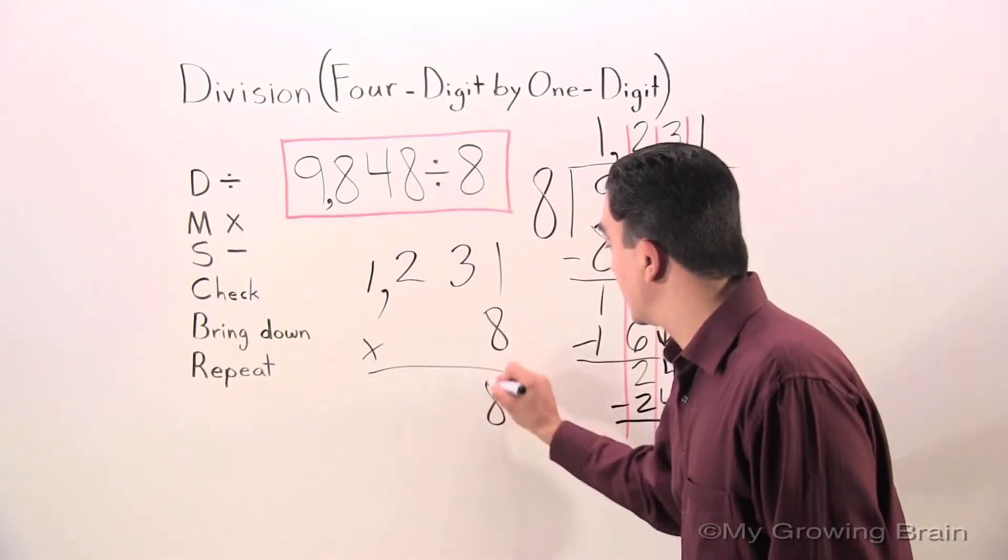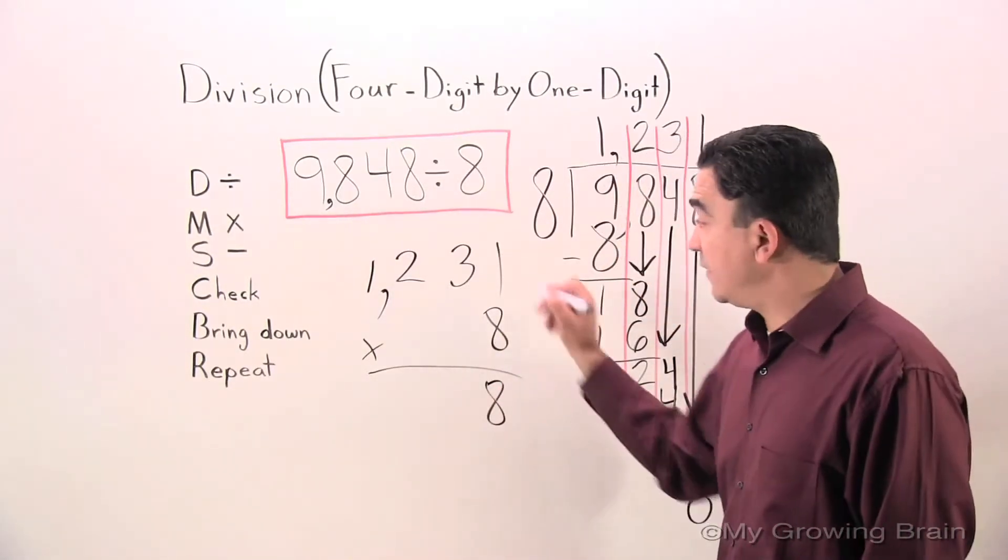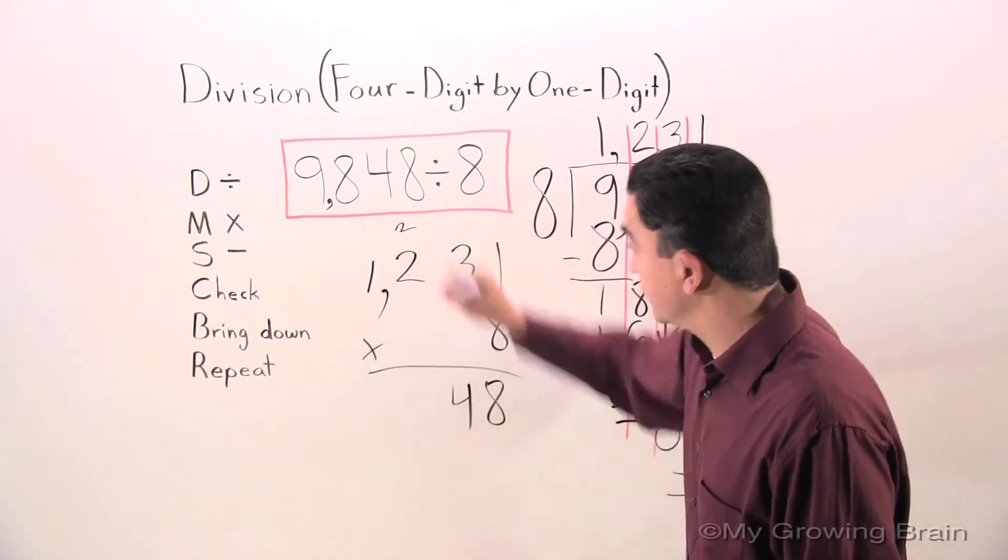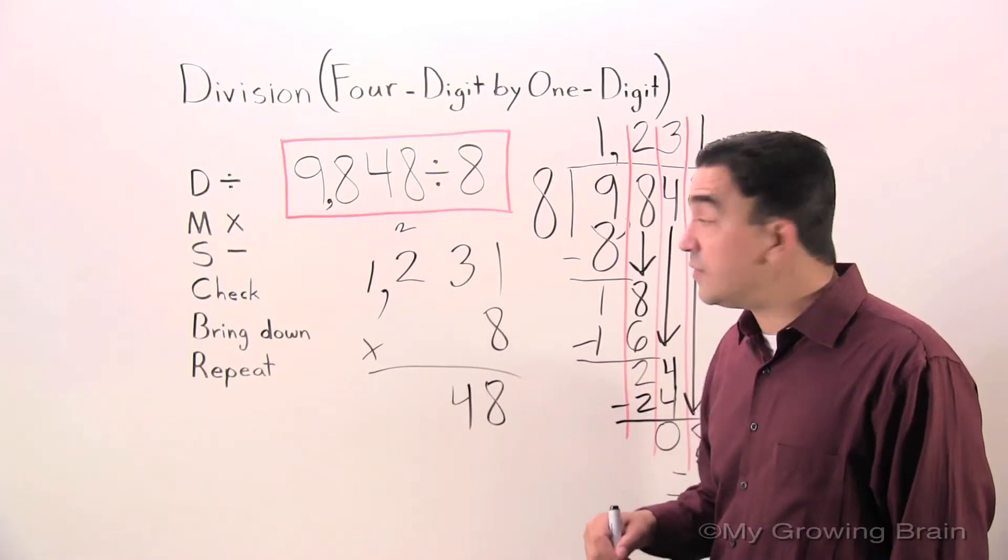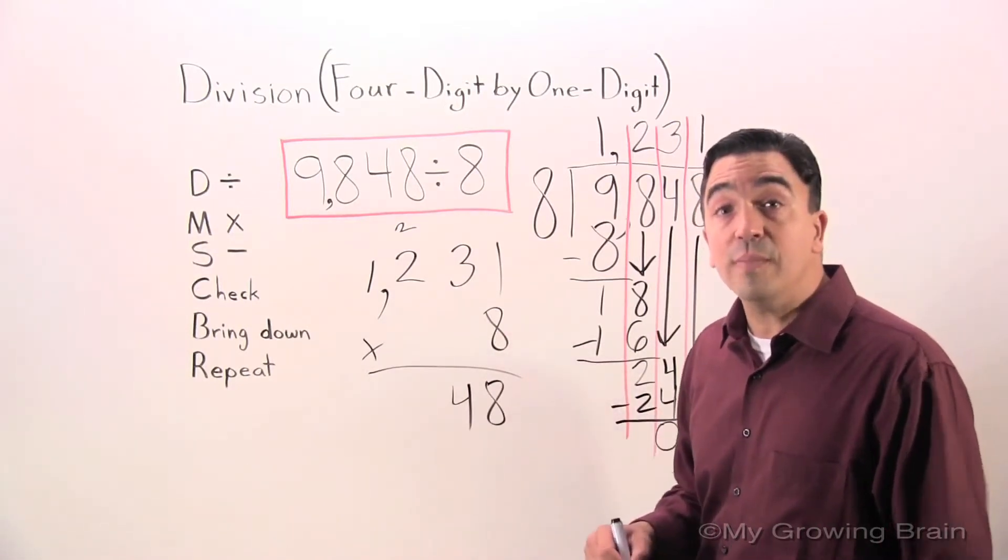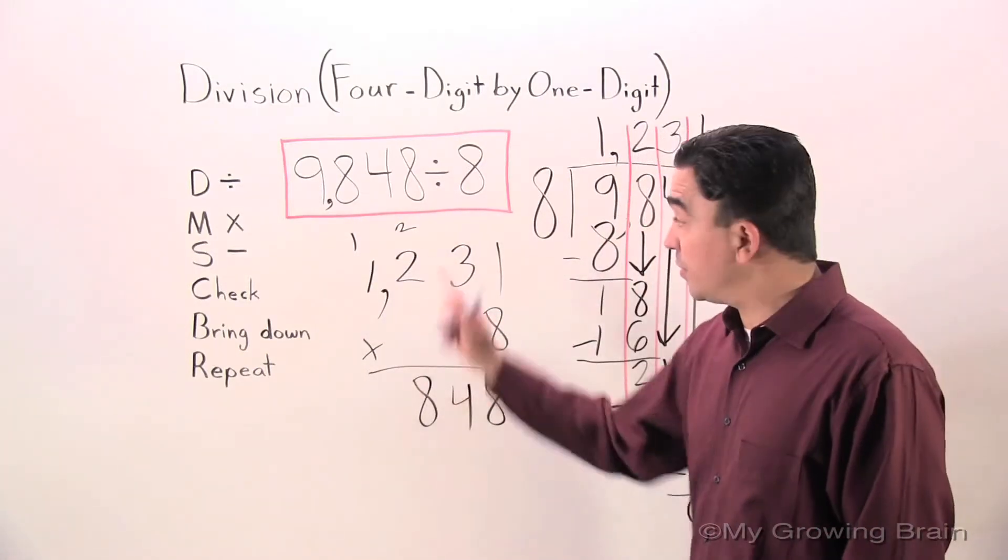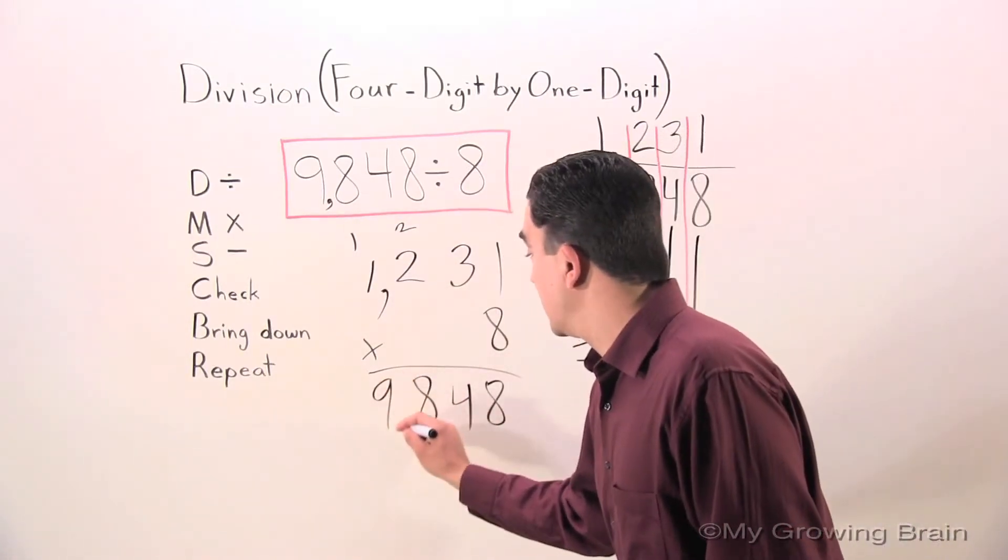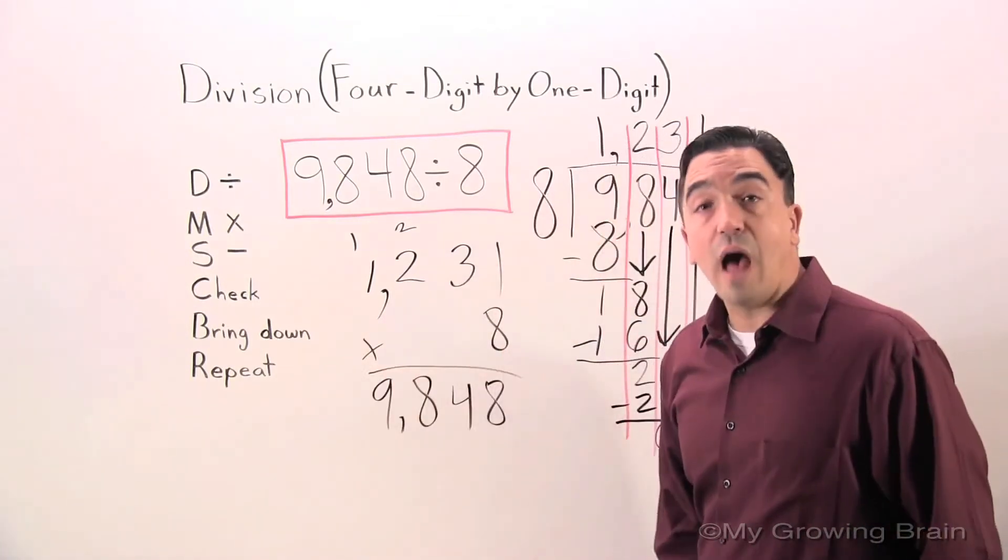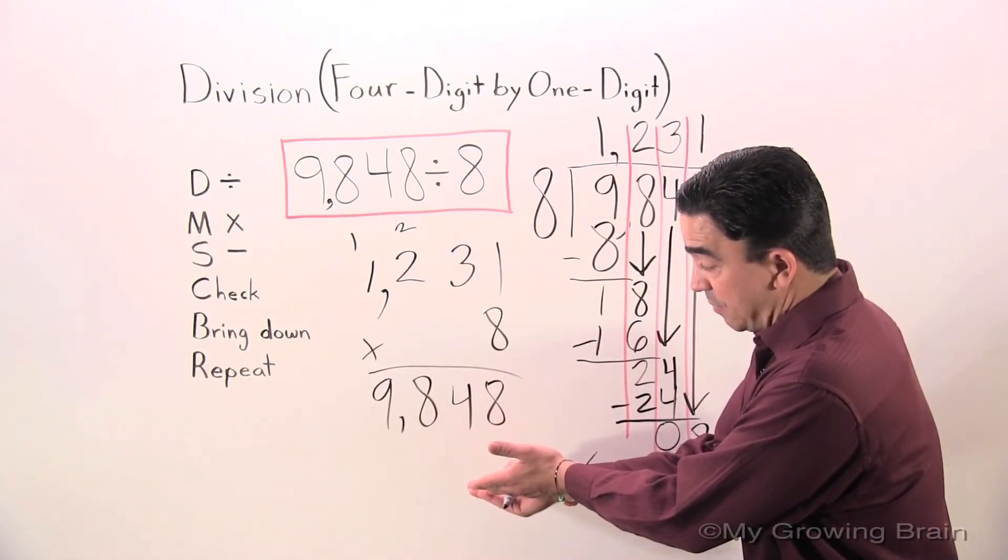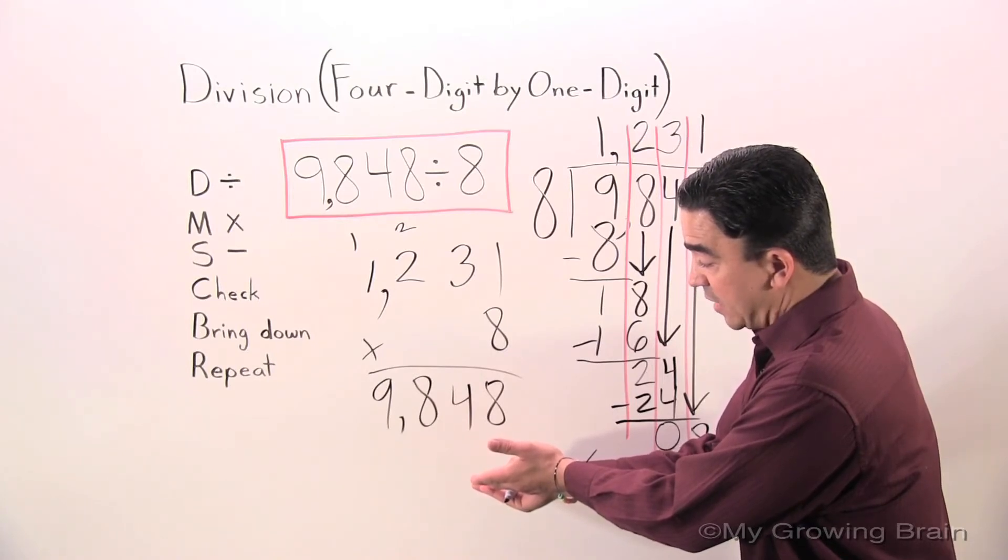8 times 1 is 8. 8 times 3 is 24. 8 times 2 is 16 plus 2, 18. 8 times 1 is 8 plus 1 is 9. Comma. Our answer is, the product is 9,848. That is the same as our dividend.